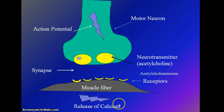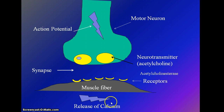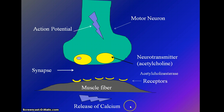Now let's talk about what happens once the calcium is released — this is a review of muscle contraction. The calcium is released from the sarcoplasmic reticulum and it binds to the active site on actin. When it binds to the active site on actin, it opens the active site, which allows the myosin crossbridge to bind to that active site.